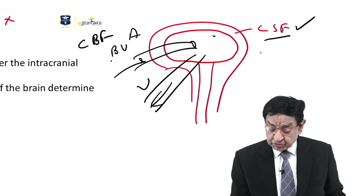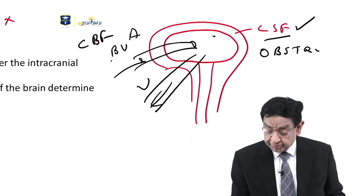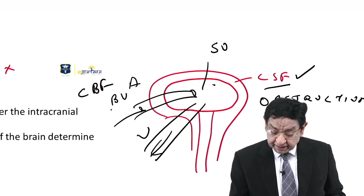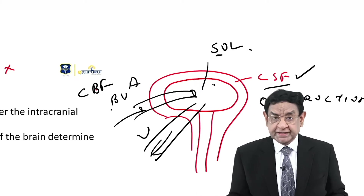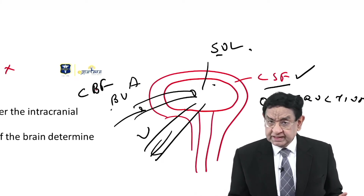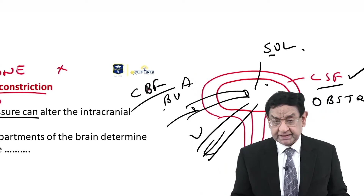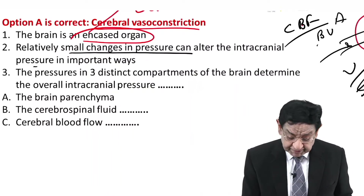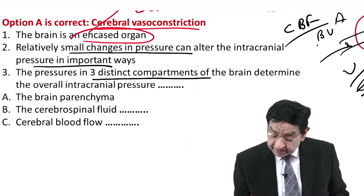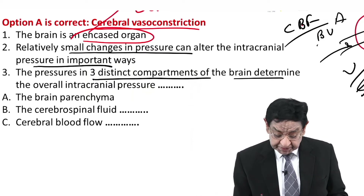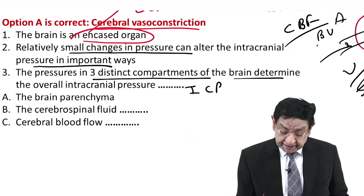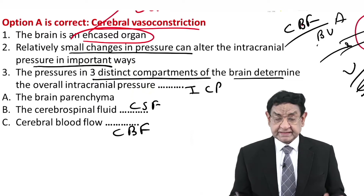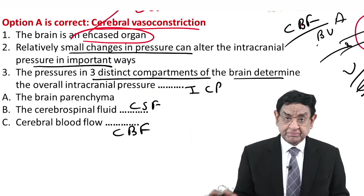The CSF component is affected whenever there is obstruction to CSF flow. Brain parenchyma is affected when there is any space-occupying lesion — SOL — which could be a tumor, abscess, glioma, or anything that causes an increase in the volume of parenchyma. The third parameter is cerebral blood flow. So intracranial pressure can be modified by three distinct compartments: brain parenchyma, CSF, and cerebral blood flow.